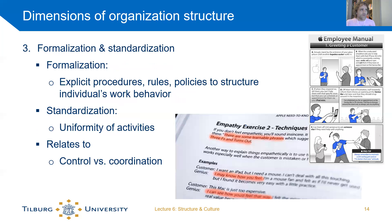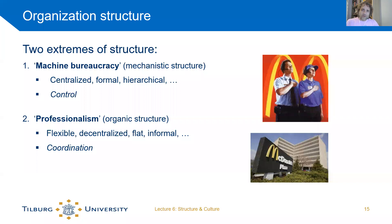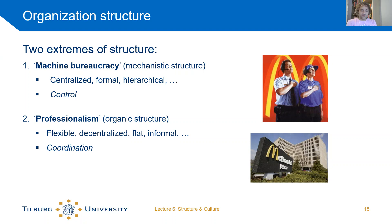If you look at archetypes of organizations, there are two extremes. One is really functional, highly centralized, and formal — what we call a machine bureaucracy with a mechanistic structure, all about control. The other is called a professional or organic organization — flexible, flat, with informal coordination rather than control.